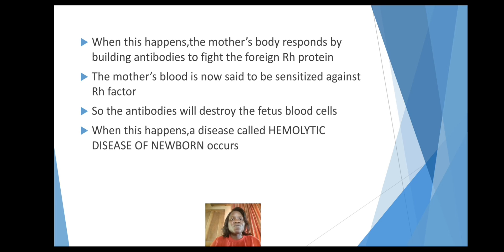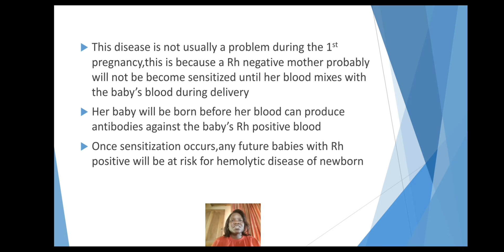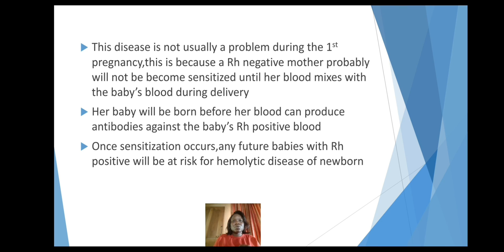When this happens, a disease called hemolytic disease of the newborn occurs. This disease is not usually a problem in the first pregnancy, because an RH negative mother will probably not become sensitized until her blood mixes with the baby's blood during delivery — the baby will be born before her blood can produce antibodies against the baby's RH positive blood. However, once sensitization occurs, any future babies with RH positive blood will be at risk of hemolytic disease of the newborn.